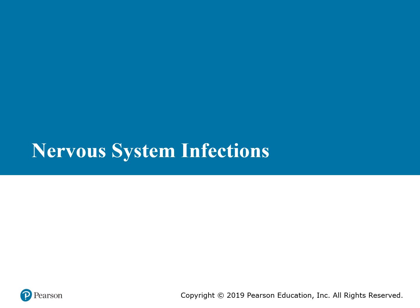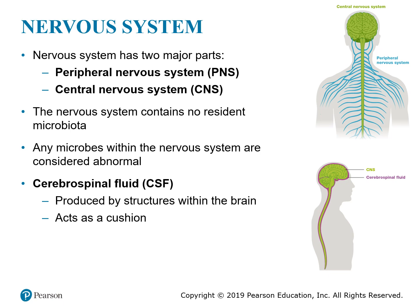This lecture will cover nervous system infections. The nervous system consists of two major parts: the peripheral nervous system and the central nervous system. The peripheral nervous system inputs and transmits information and is composed of various nerves, whereas the central nervous system integrates information received and sends back an action plan. It is composed of the spinal cord and the brain, and this is where signal transmission happens.